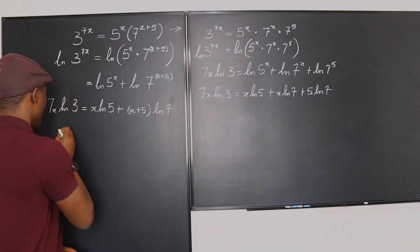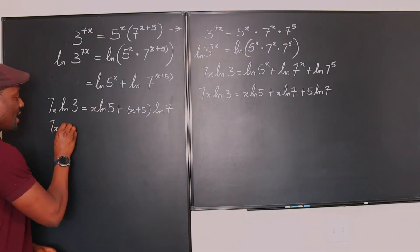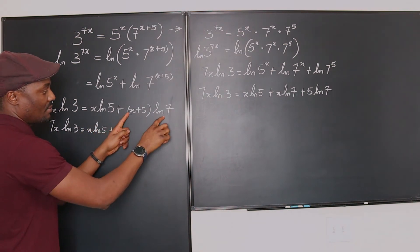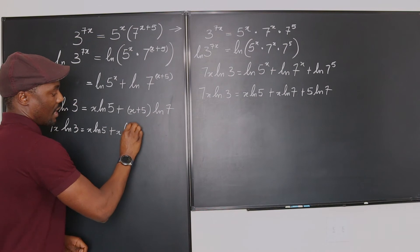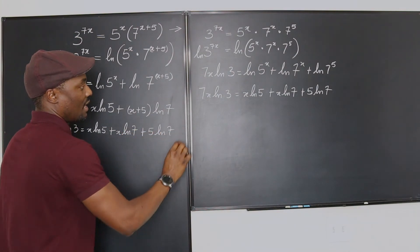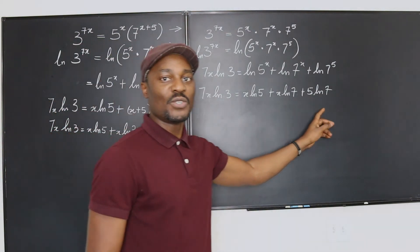So, let's distribute this. You have 7x ln 3 equals x ln 5 plus x times this gives you x ln 7 plus 5 ln 7. That's exactly what you have here.